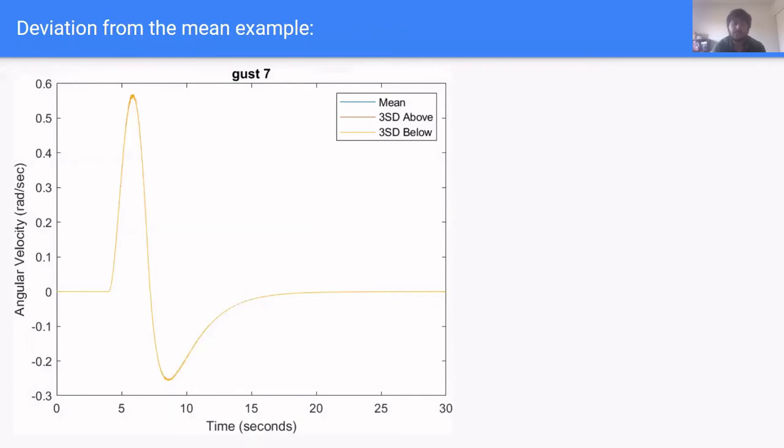Here is an example of showing how standard deviation does not compare to actual measured angular velocity. We have plotted the mean three standard deviations above and three standard deviation below of filtered angular velocity for one gust disturbance. As you can see, it all looks like the same line showing how randomness really does not play that big of an impact in the filtered angular velocity measurements.